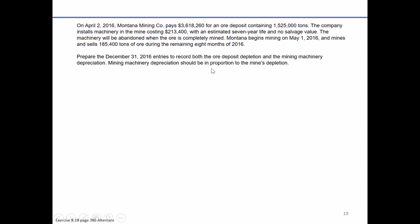We're asked to prepare entries to record depletion for the ore deposit. Depletion is very similar to the concept of depreciation — it's simply cost allocation. We're trying to take that $3,618,260 purchase price and allocate it to expense over time. Just as we use depreciation for plant assets, we use depletion for natural resources.